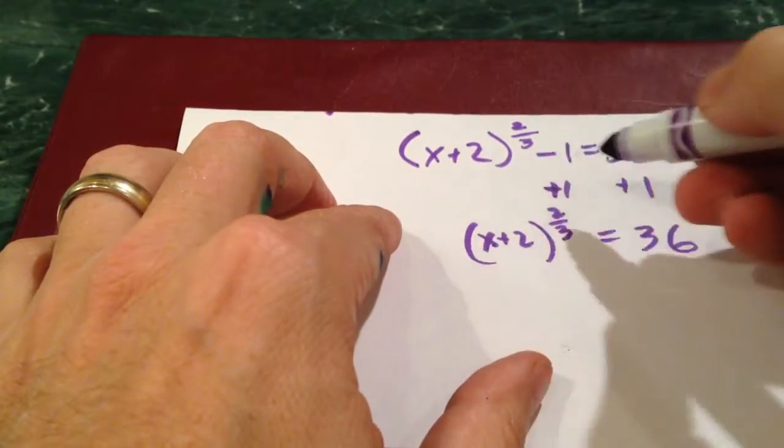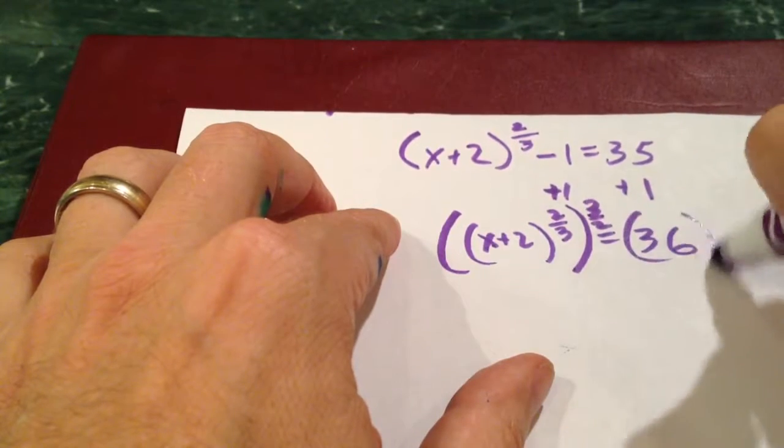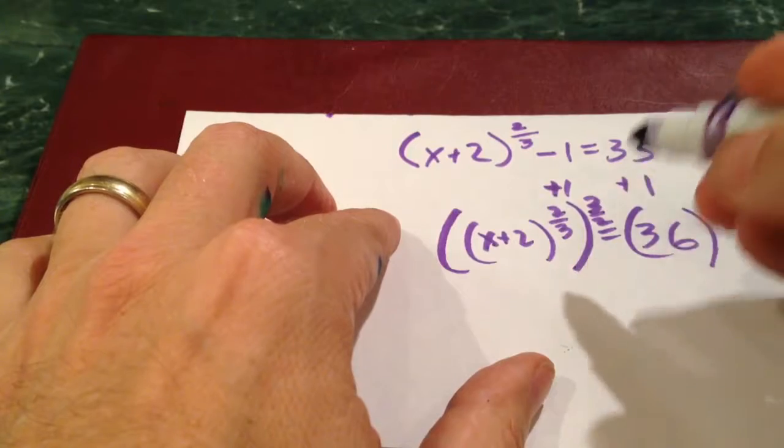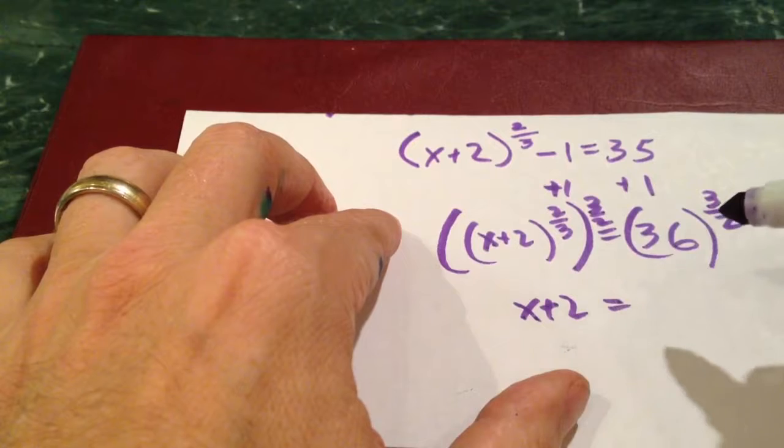But I'm just going to do it all in one step. So that's raised to the 3 halves. Over here, raised to the 3 halves. 2 times 3 is 6, 3 times 2 is 6, 6 over 6 is 1. So it's just x plus 2 to the 1, and I can actually drop the parentheses now.